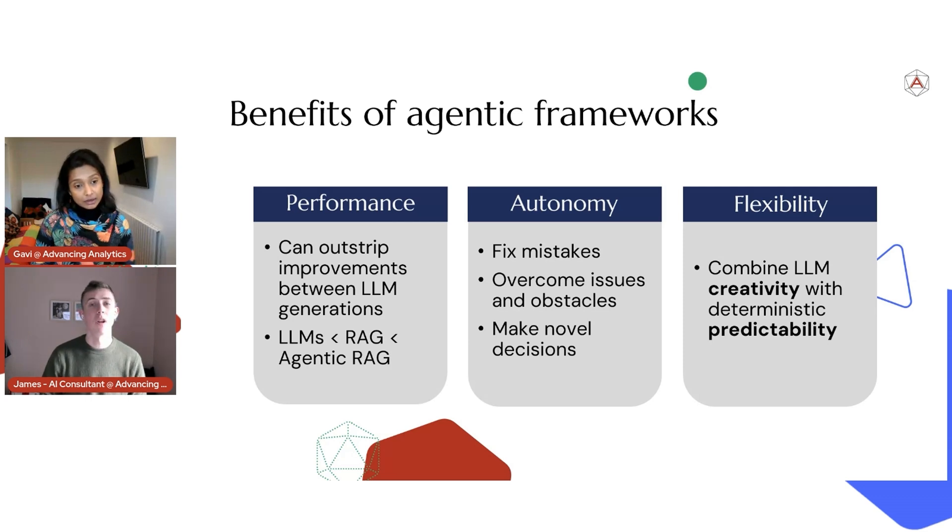Another benefit of agents are the autonomy. They can fix their own mistakes. They can overcome obstacles. They're not super intelligent. They can't do absolutely everything, but it's a better shot at overcoming issues, particularly when systems are quite changing or dynamic, particularly things involving code generation or back and forth with customers, where a previous workflow might just fall down because it hits an error or it doesn't know what to do next. But an agent can kind of start to make those decisions of how to overcome those issues.